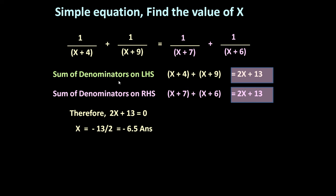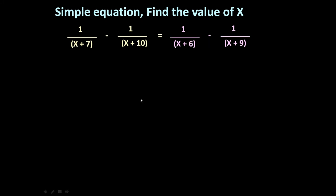Let us solve one more similar problem. If the given equation is 1 upon x plus 7 minus 1 upon x plus 10, is equal to 1 upon x plus 6 minus 1 upon x plus 9.